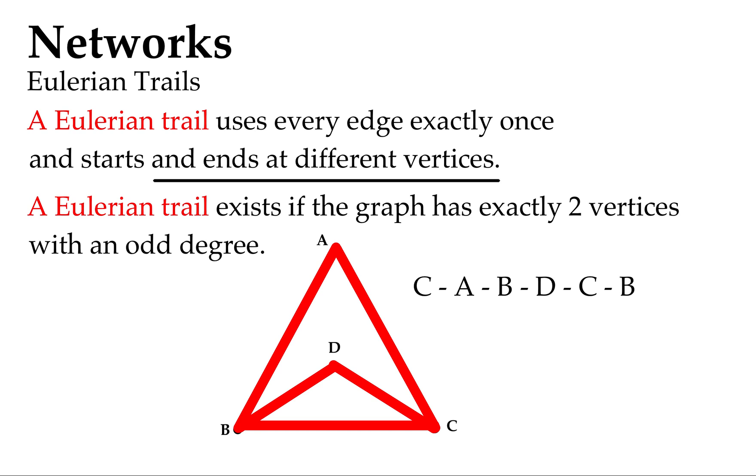We haven't repeated any edges and we've started at C, ended at B. So we've ticked off the idea that we need to start and end at a different vertex. So yeah, I think we're there. That's an example of a Eulerian trail.